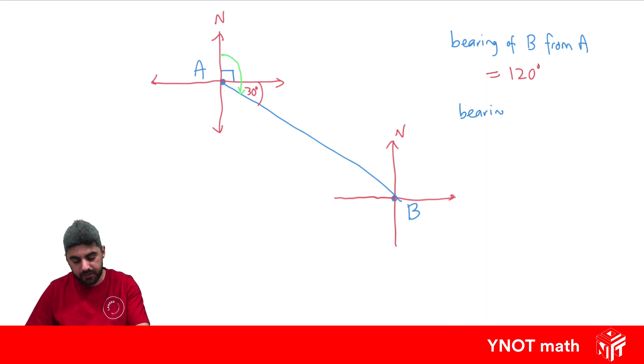What about the bearing of A from B? Can we work that out? Well, we can use the fact that the east-west line here is parallel to the east-west line here, and the north-south line is also parallel. So if this line is parallel, this line becomes a transversal, and we know that this angle is going to be alternate to this one here. So this angle is also 30 degrees.